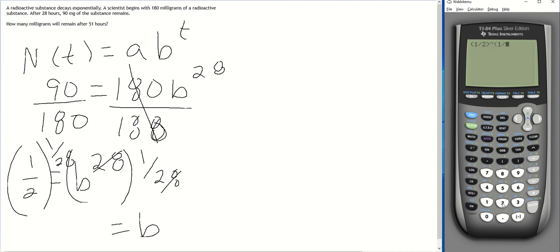Remember, 1 over 28 as a power is the same thing as the 28th root. So that tells me that my b value is approximately 0.9755.